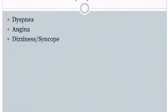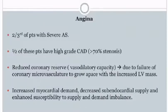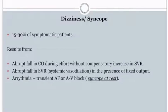The classic symptomatic triad is dyspnea, angina, and syncope. Dyspnea is the most common symptom, with gradual decrease in exercise tolerance; if LV failure develops, there will be cough, PND, progressive dyspnea on exertion, and orthopnea. Angina is present in two-thirds of patients with severe aortic stenosis; half have high-grade coronary artery disease with more than 70% stenosis, with reduced coronary reserve due to failure of coronary microvasculature to grow apace with increased LV mass, increased myocardial demand, decreased subendocardial supply, and enhanced susceptibility to supply-demand imbalances.